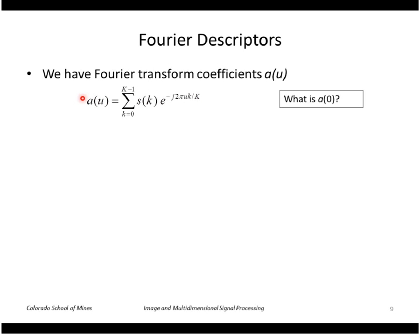Here are our Fourier descriptors. A of 0 is, as you can see, if you plug in 0 here, you're basically adding up all of the points along the contour. There's k points. So if you were to divide by k, you would get the centroid of the shape. So A of 0 is actually the centroid of the shape multiplied by k, the number of points.